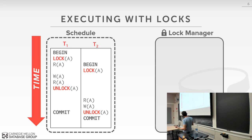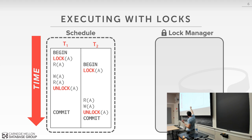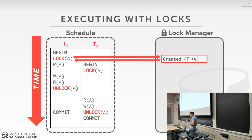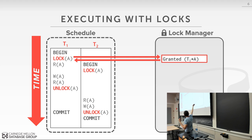Going back to an example, we can introduce locks into our schedules. Transaction T1 gets a lock on A — this request has to occur before any operation on that object. We say we want a lock on A before we can read or write A. The lock manager is the centralized coordinator — the traffic cop for the entire system. Anytime you want a lock on an object, you go to the lock manager and ask. Nobody else holds it, so it's granted.